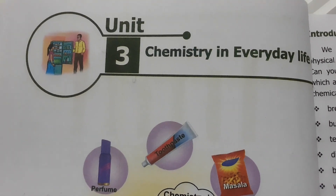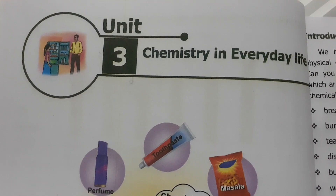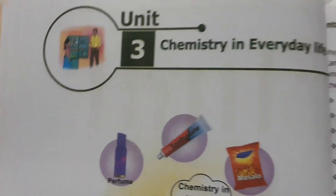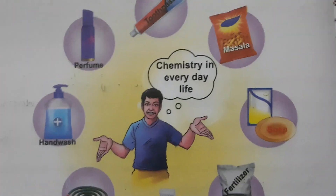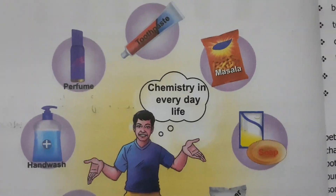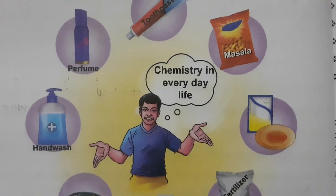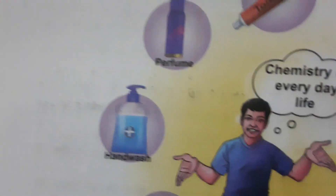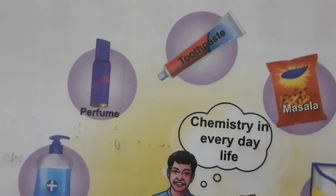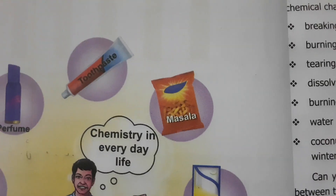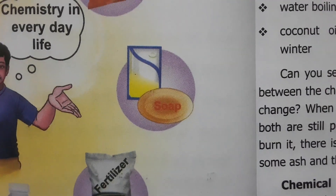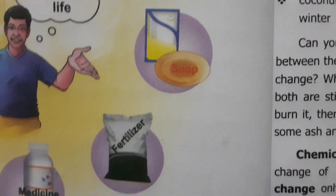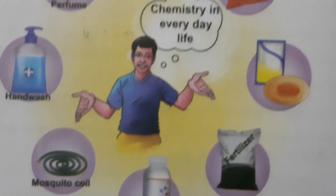Today we are going to see the book back evaluations from Standard 6, Term 3, Unit 3: Chemistry in Everyday Life. Chemistry affects our daily life — we use sanitizers, perfume, toothbrush, masala, cell phones, fertilizers, and tablets. Whatever we use daily is because of the gift of chemistry.